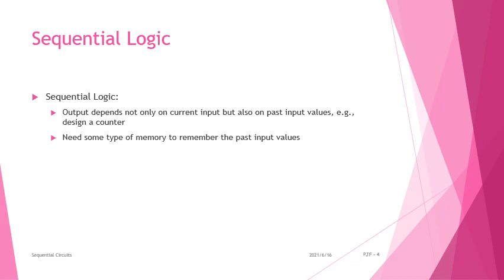That is why sequential logic uses memory devices. It has a feedback loop and memory devices in the circuit. This is called sequential logic. For example, a counter is a sequential logic example.